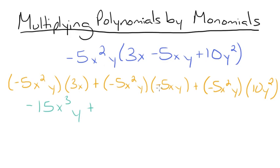Plus, here's negative 5 times negative 5, so this will be a positive 25. x squared times x is x cubed. And y times y is y squared. Plus, negative 5 times 10 is negative 50. So we'll have negative 50 x squared. And y times y squared is y cubed.